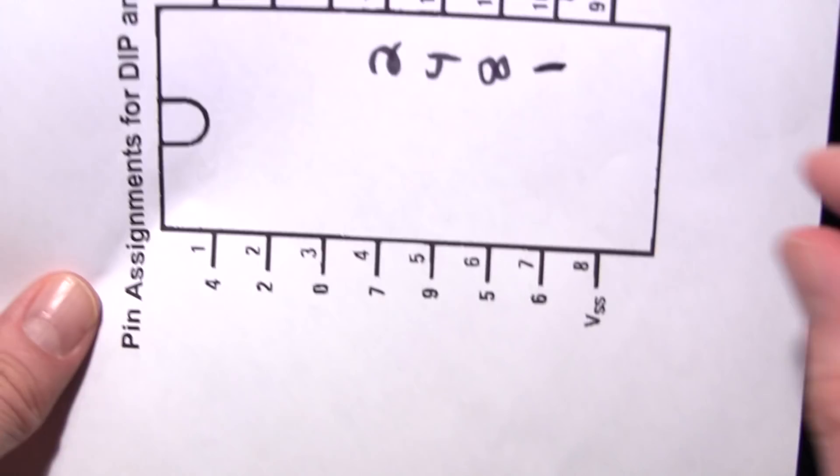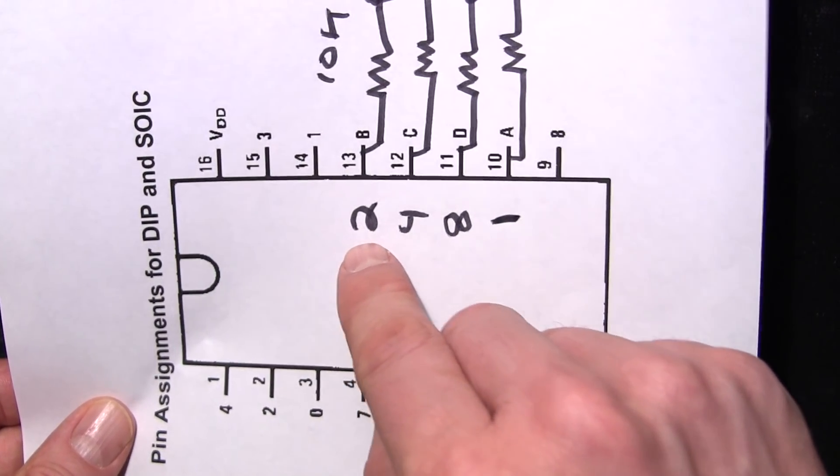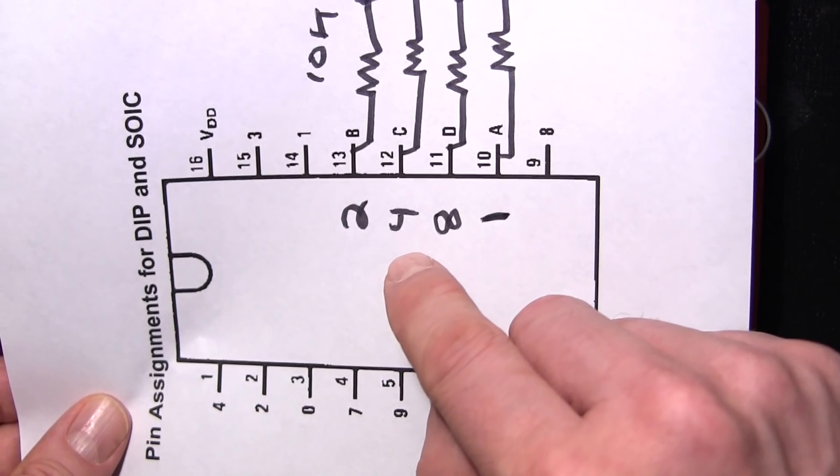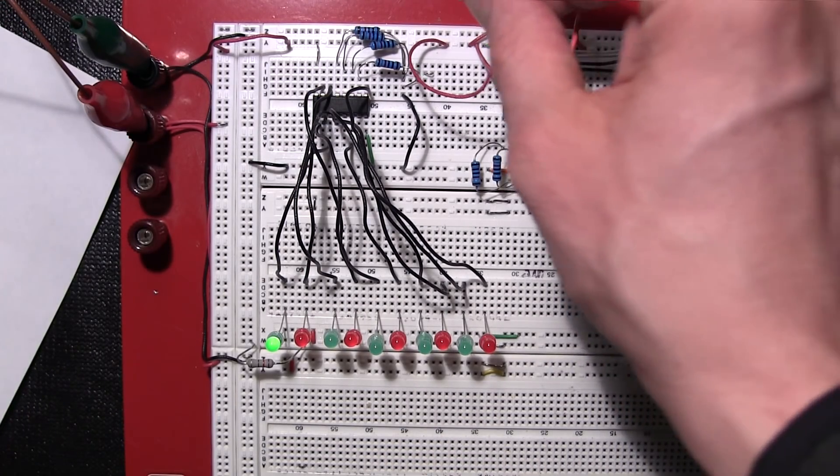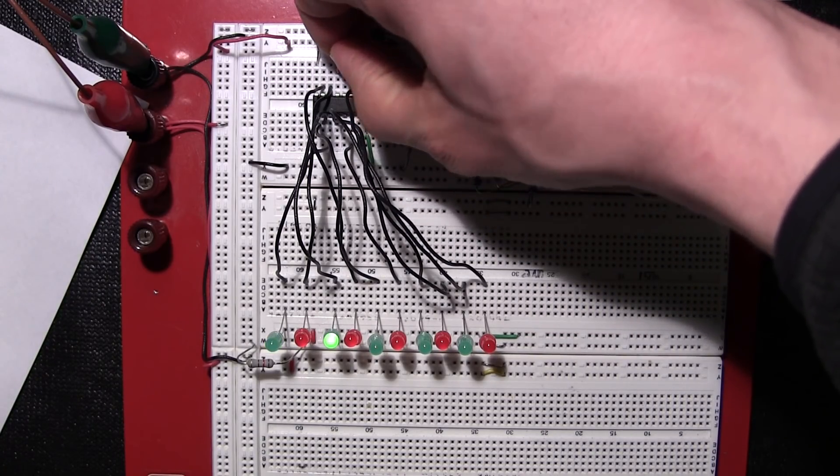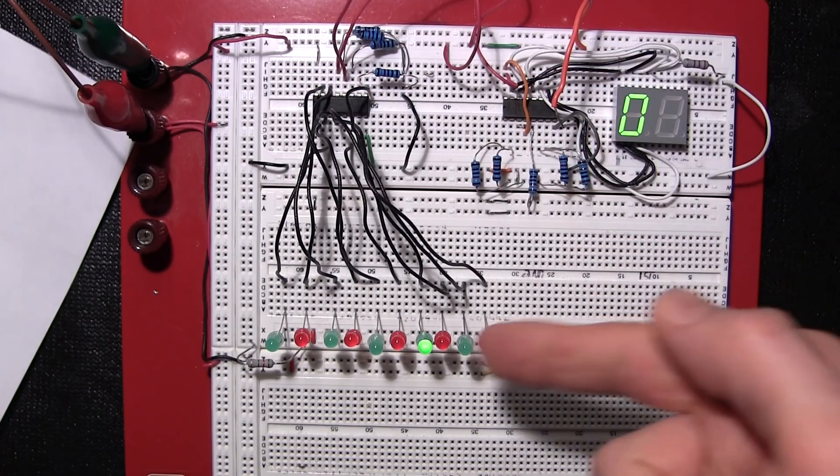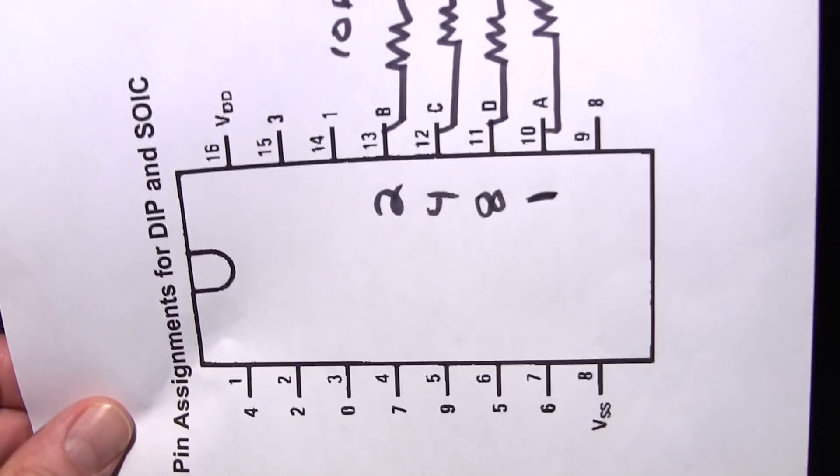Just say I wanted to make the number 6 light up. It would have to be 1, 1, 0, 0, because 4 plus 2 is 6. So I'll take two of these leads here, plug the first one in here, and the second one in here, and there's the number 6 lit up.